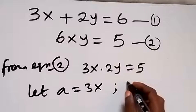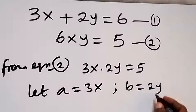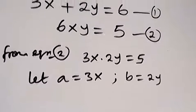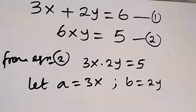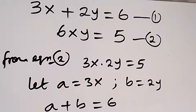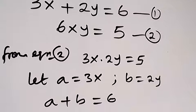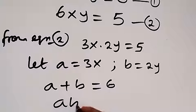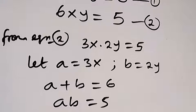Let b equal to 2y. Then we can rewrite the equations. Equation 1 will now become a plus b equals 6. Equation 2 will now become a times b equals 5.